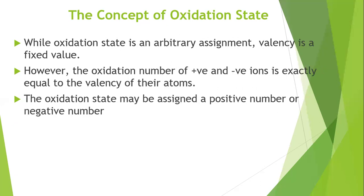While the oxidation state is arbitrarily assigned, valence is a fixed value — you can't change the valence, but the oxidation state changes according to the reaction of that element in another compound. However, the oxidation state of positive and negative ions is exactly equal to the valence of those atoms.